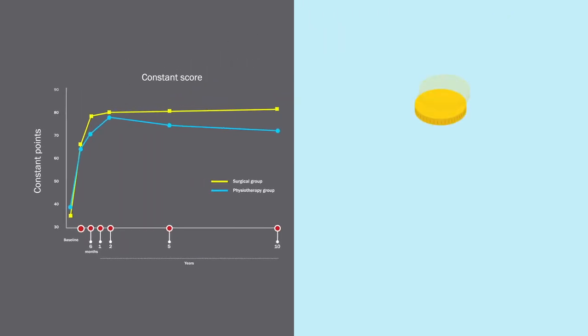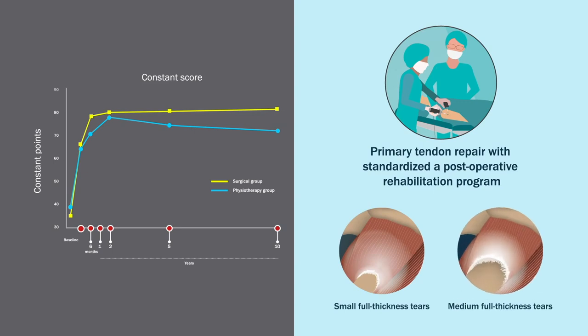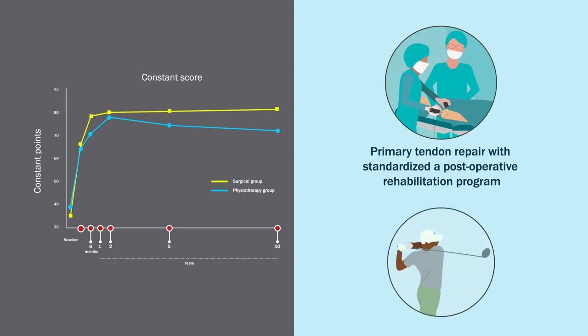Although other factors such as cost and risk of complications need to be considered, these results support the use of primary tendon repair to treat younger patients with small and medium-sized rotator cuff tears who want to return to an active lifestyle.